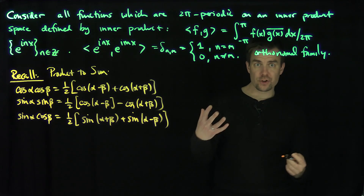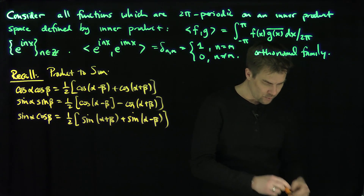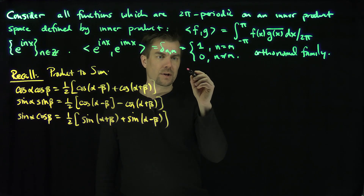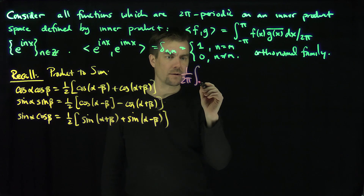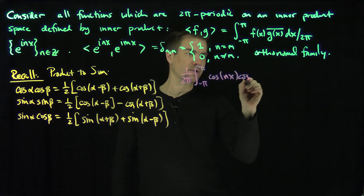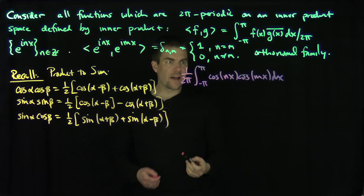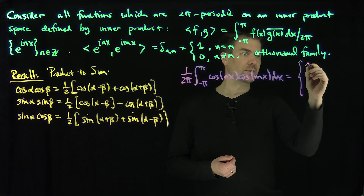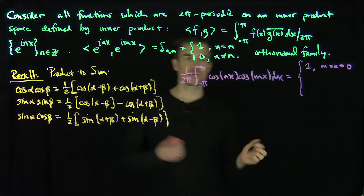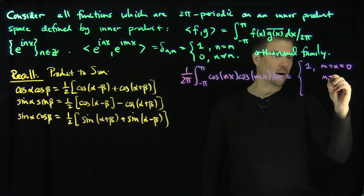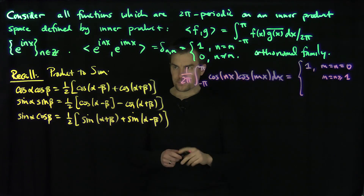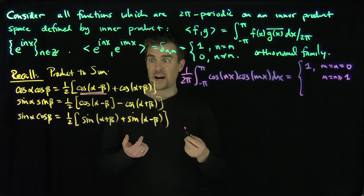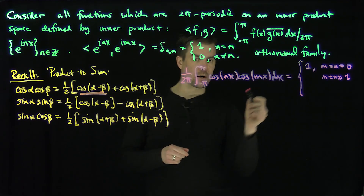Let's use these product-to-sum formulas to derive the orthogonality relations for sine and cosine on this interval with respect to this inner product. Consider the integral from −π to π of cosine(nx)cosine(mx) dx. When m and n are both equal to 0, each factor is 1, so the integral is trivially 1. When m equals n and both are ≥ 1, using the product-to-sum formula, the first term gives cosine(0) = 1, contributing one-half.